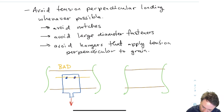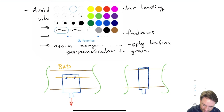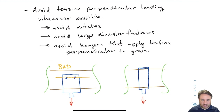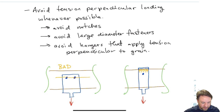A much better detail instead of bolting to the side of the member is going over the top. If I have a U-shaped plate going over the top of the piece of wood, when I pull on it I'm not creating tension perpendicular — I'm transferring that load in compression perpendicular to grain, right at the top. I'll still probably need a bolt to keep it in place, but the bolt is not transferring the load — the saddle on top is. That's much better.